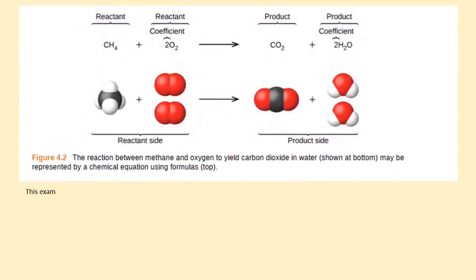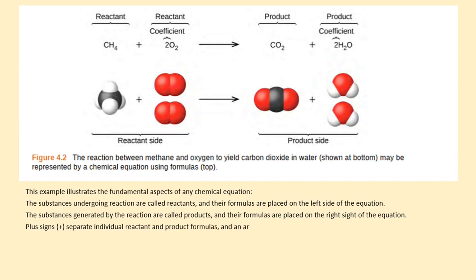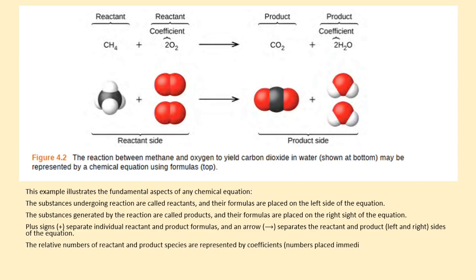This example illustrates the fundamental aspects of any chemical equation: the substances undergoing reaction are called reactants, and their formulas are placed on the left side of the equation. The substances generated by the reaction are called products, and their formulas are placed on the right side of the equation. Plus signs separate individual reactant and product formulas, and an arrow separates the reactant and product (left and right) sides of the equation. The relative numbers of reactant and product species are represented by coefficients, numbers placed immediately to the left of each formula. The coefficient of 1 is typically omitted.